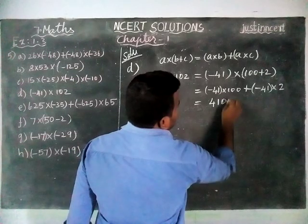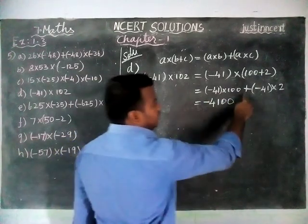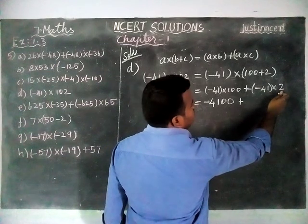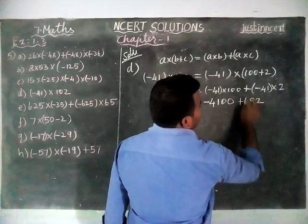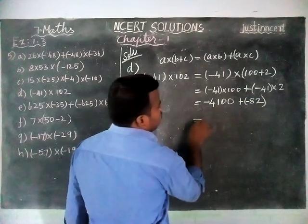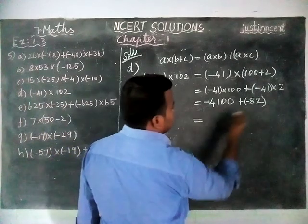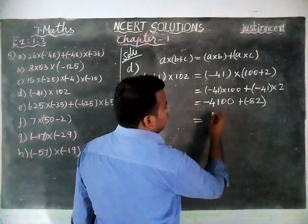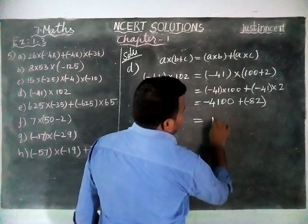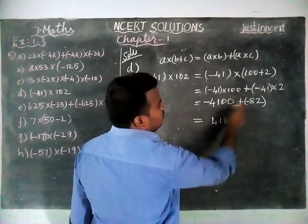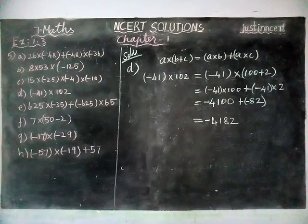Expanding: (-41) × 100 + (-41) × 2. This equals -4,100 + (-82). Both have a minus sign, so we add them and keep the minus sign. When we add 4,100 and 82, we get 4,182. Both are negative, so the answer is -4,182.